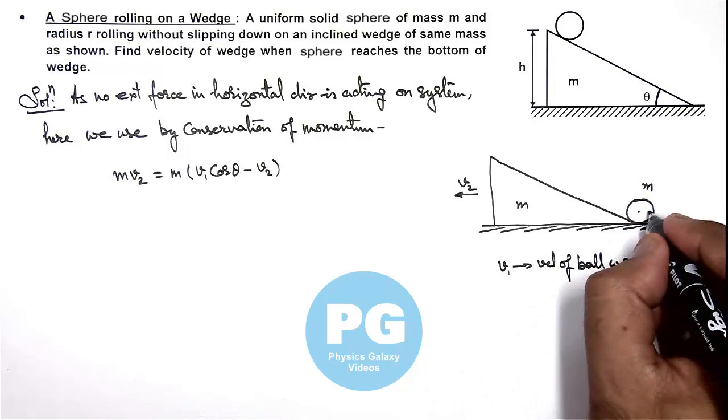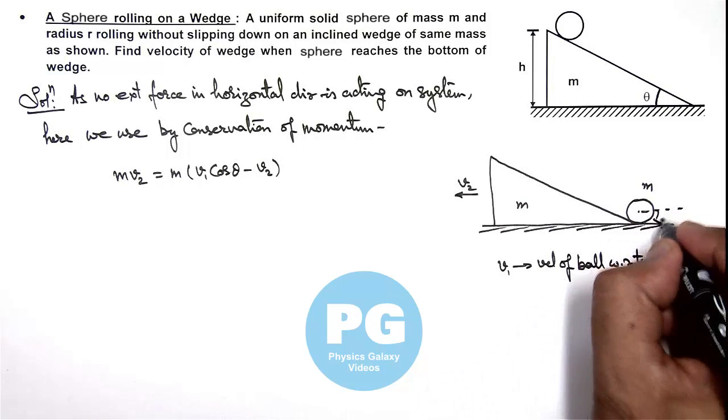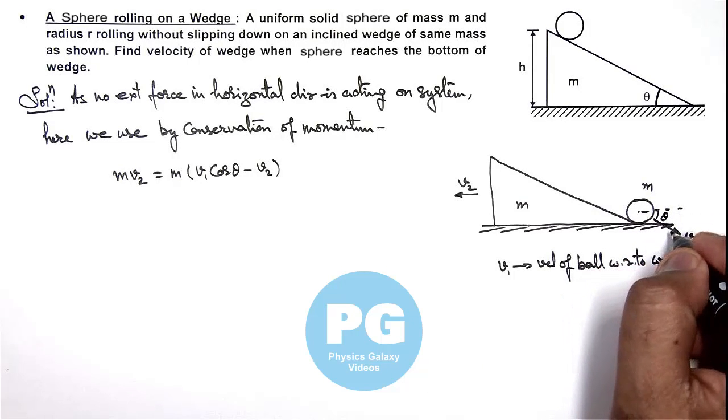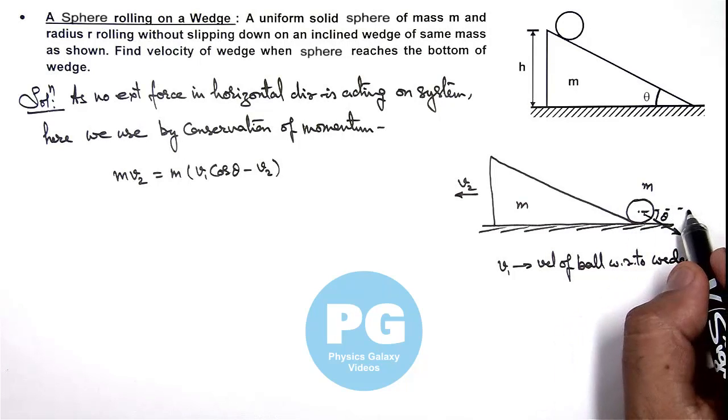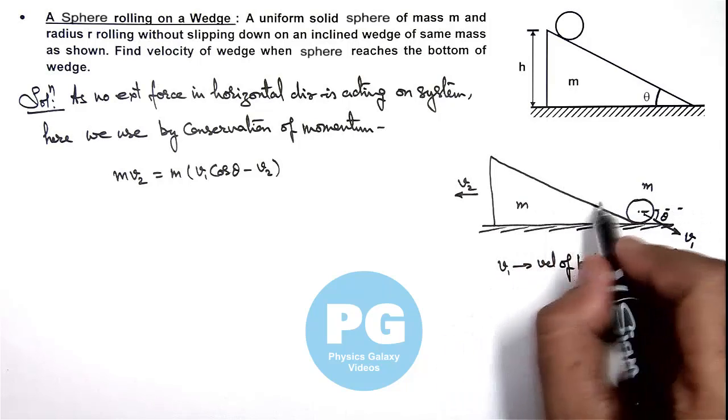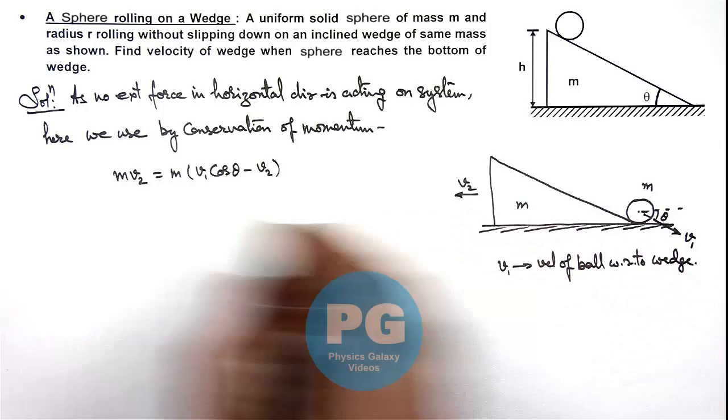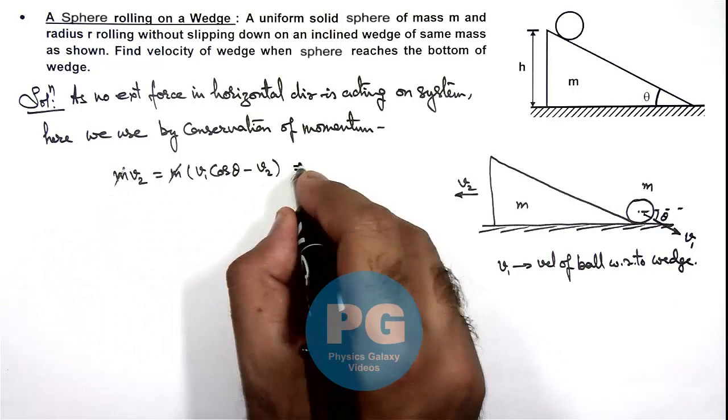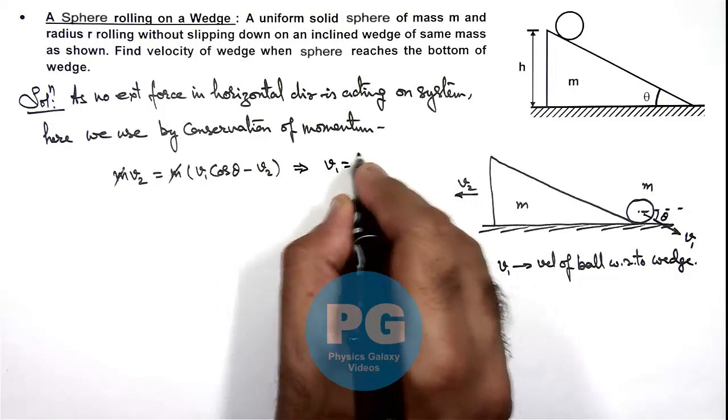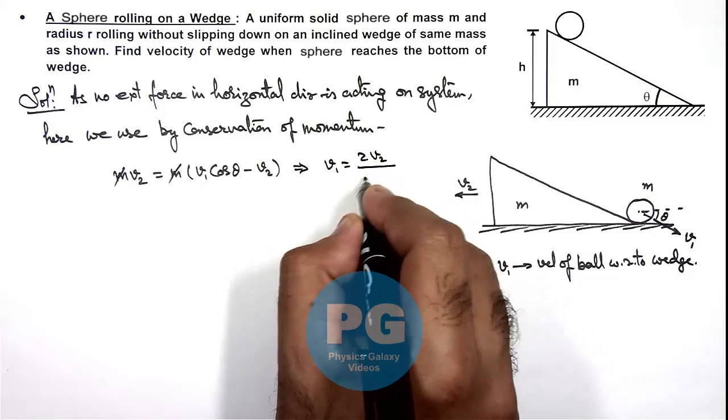So in this situation with respect to horizontal v1 is moving at an angle θ. So ball is moving toward right at v1 cos θ as well as it is moving with the wedge toward left with v2. So simplifying this relation m gets cancelled out and this will give us v1 is equal to 2v2 by cos θ.